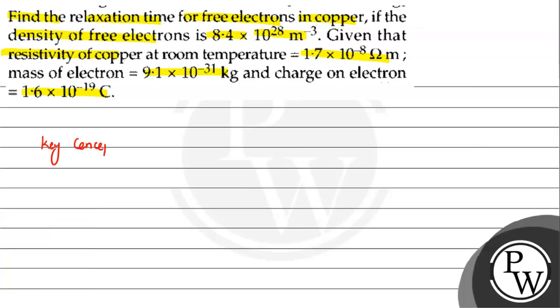So let's take the key concept. The formula we use to solve this: rho equals m upon n e square tau. This is the key concept for how to solve this.